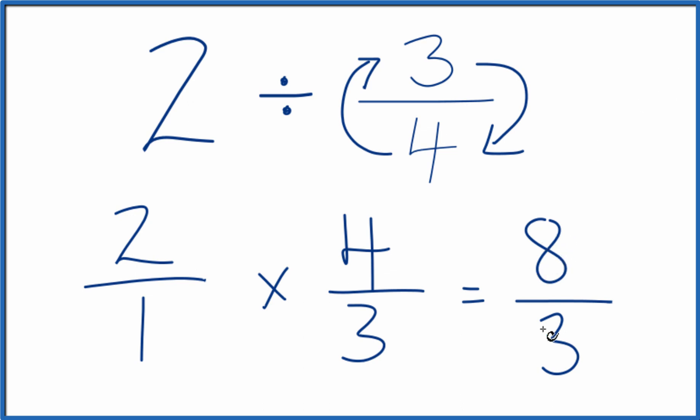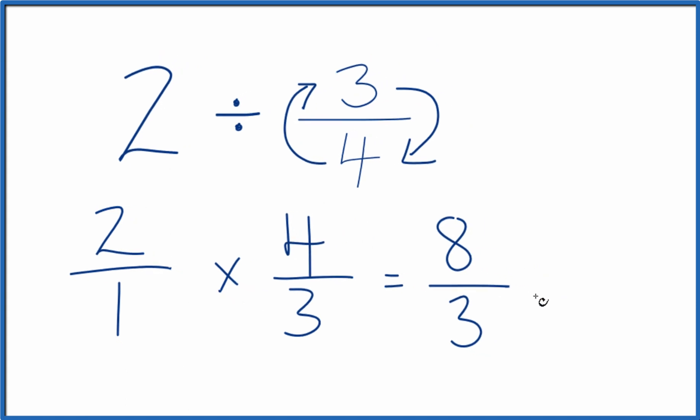Since 8 is larger than 3, we could change this to a mixed number here. So 3 goes into 8 2 times. 2 times 3 is 6 with 2 left over. So we could also call it 2 and 2 thirds.